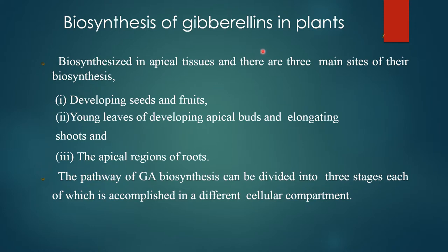Biosynthesis of Gibberellins in plants occurs in apical tissue, and there are three main sites of biosynthesis: developing seeds and fruits, young leaves of developing apical buds, and elongating shoots and apical region of roots.